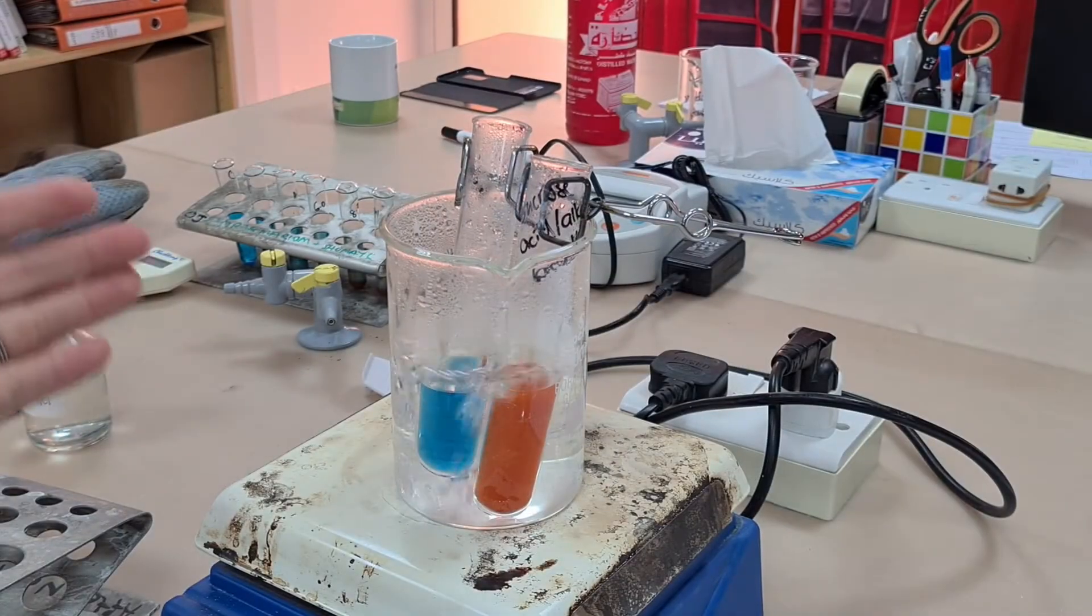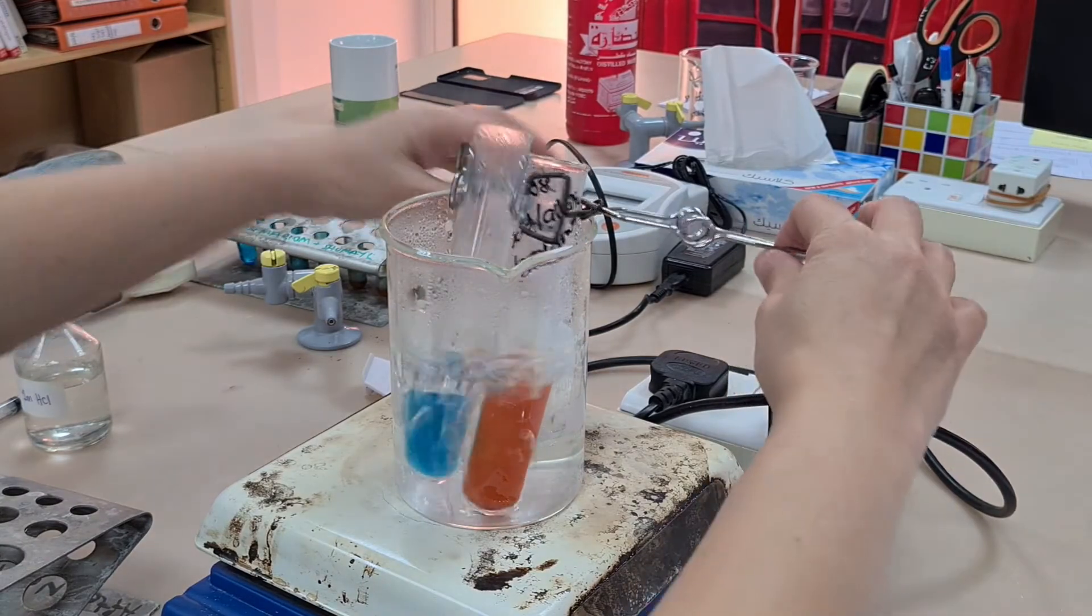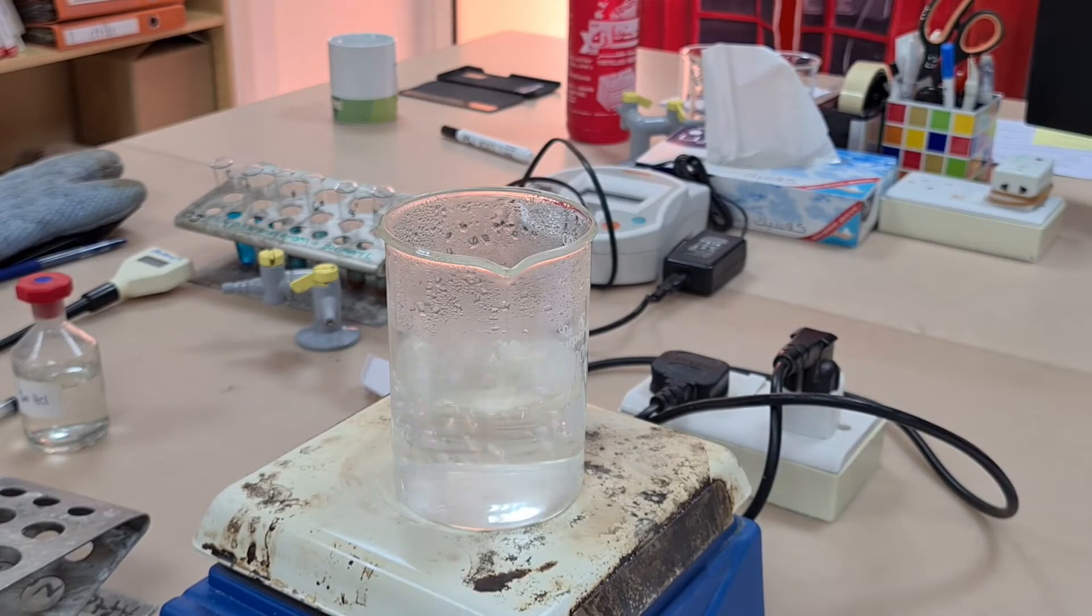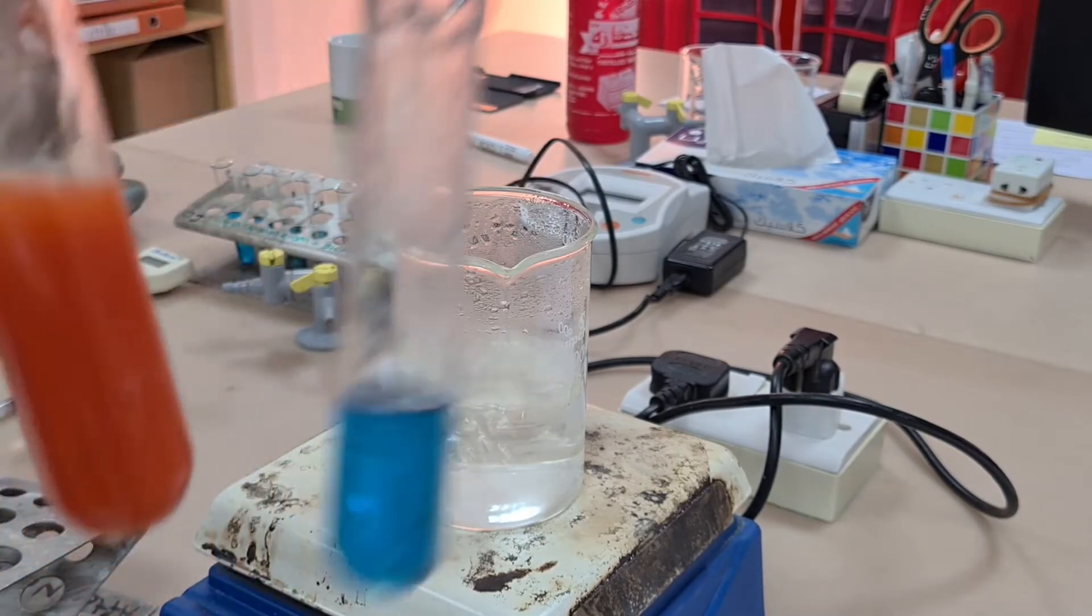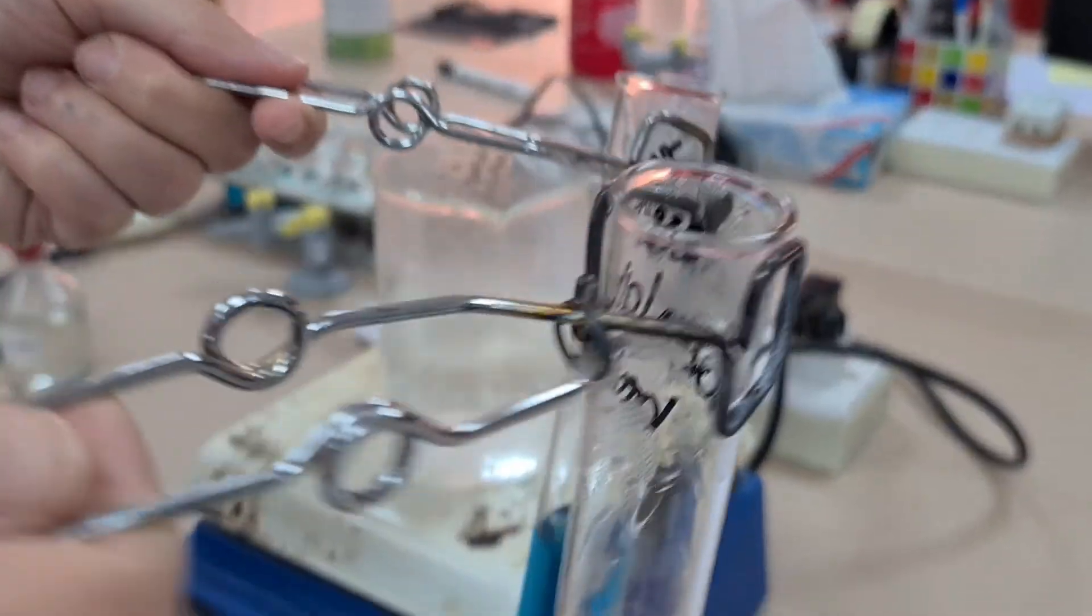However, the boiling tube on the right confirms we do have a disaccharide because it's been heated with acid which has broken the glycosidic bond down, resulting in two monosaccharides. Tested again with Benedict's reagent, we now have a positive result.